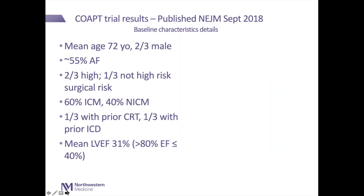These results were published and presented at our national meeting in September, published in the New England Journal of Medicine. The patient population had an average age of 72, most were high risk, about a third had prior defibrillators, and the mean ejection fraction was 30% — normal being over 50%. So these were people with pretty severely dysfunctional ventricles.